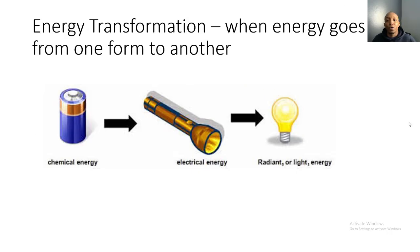An energy transformation is when energy goes from one form to another. For example, a battery has chemical energy inside. When you put that battery in a flashlight, it transforms into electrical energy. When you turn the flashlight on, that electrical energy transforms into radiant energy — the light we see — and also gives off thermal energy, the heat we feel from the flashlight.